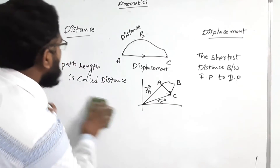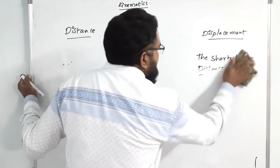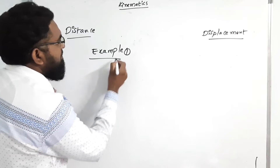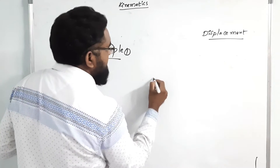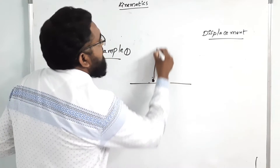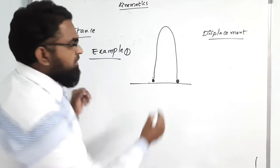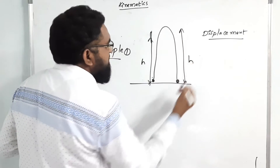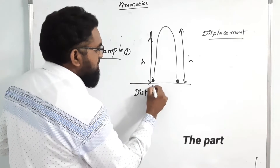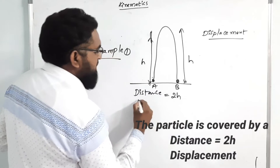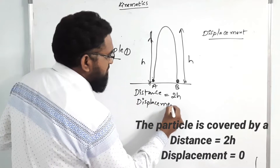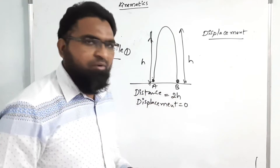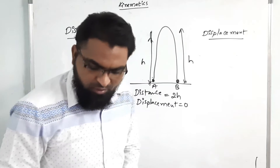Next, examples. First example: suppose this is the ground. A ball is vertically thrown upward and returns to the ground. The total height going up is h and coming down is also h, same height. So distance A to B is 2h, and displacement is 0. Why 0? Because the shortest distance between initial point and final point — it is reaching the same point, the ground. So displacement is 0.